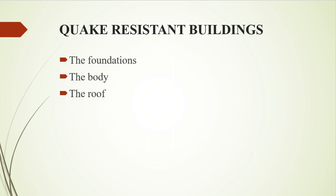Regarding the body of the building, walls should be properly designed to resist lateral forces, should be light in weight, made of wood or other lightweight materials, and reinforcements should be used in the walls. For the roof, flat roofs give better resistance compared to sloping roofs, and projections beyond the roof such as chimneys should be avoided.